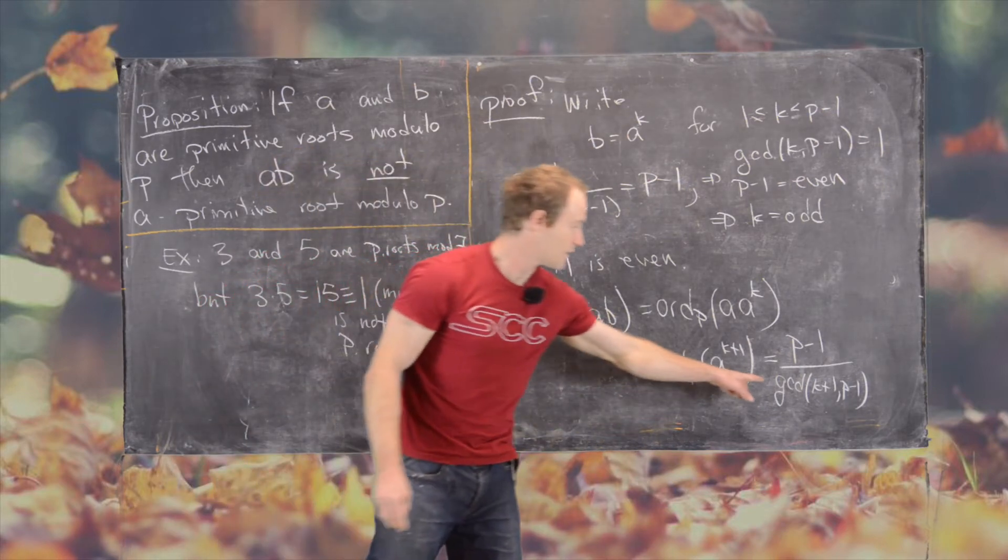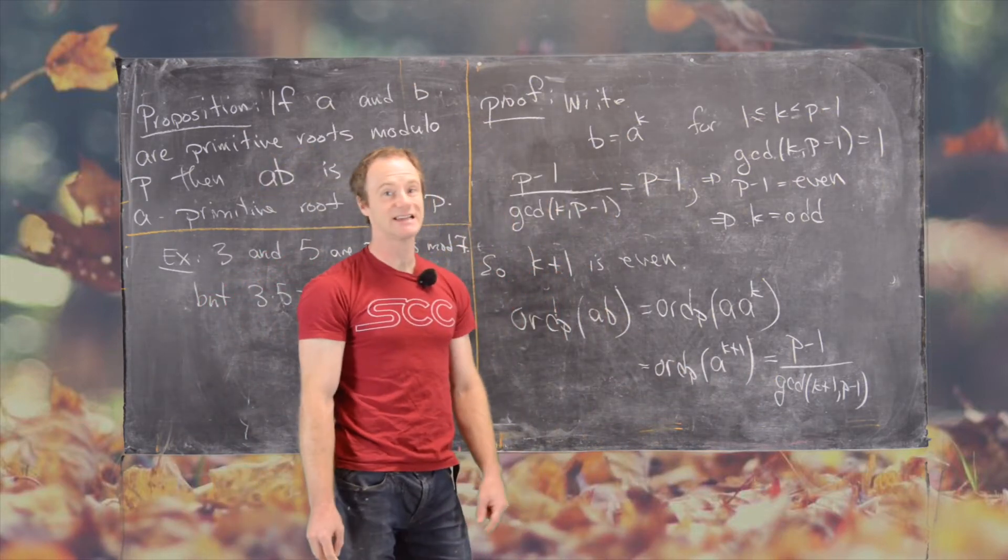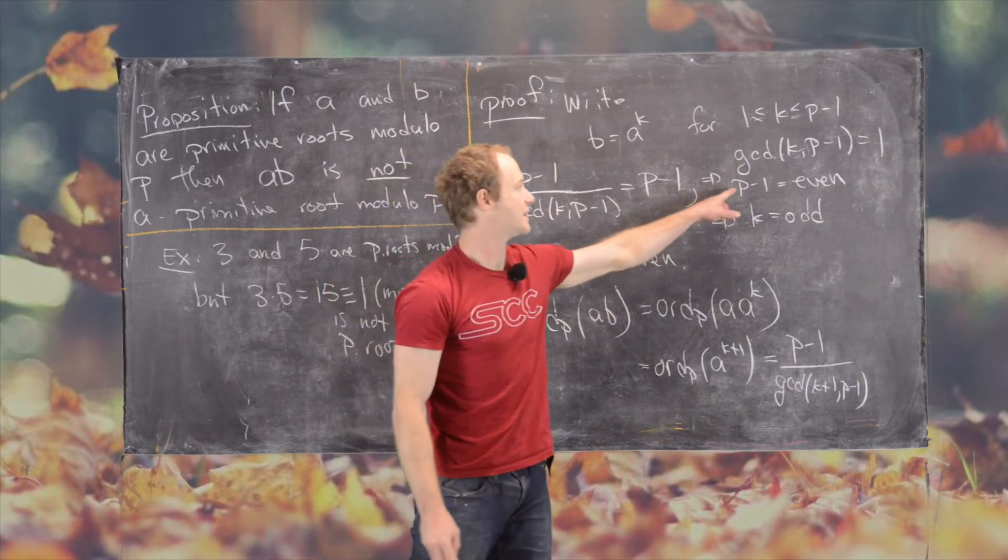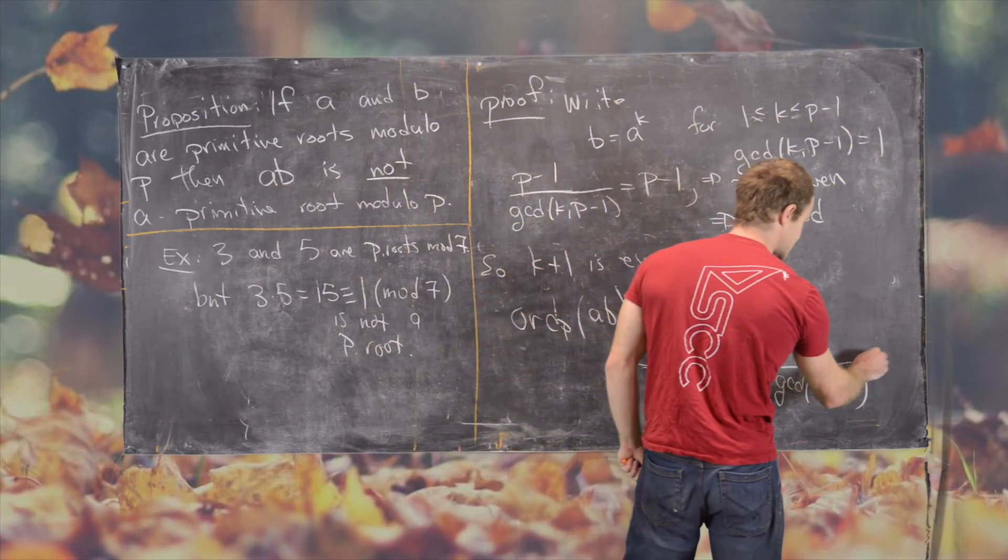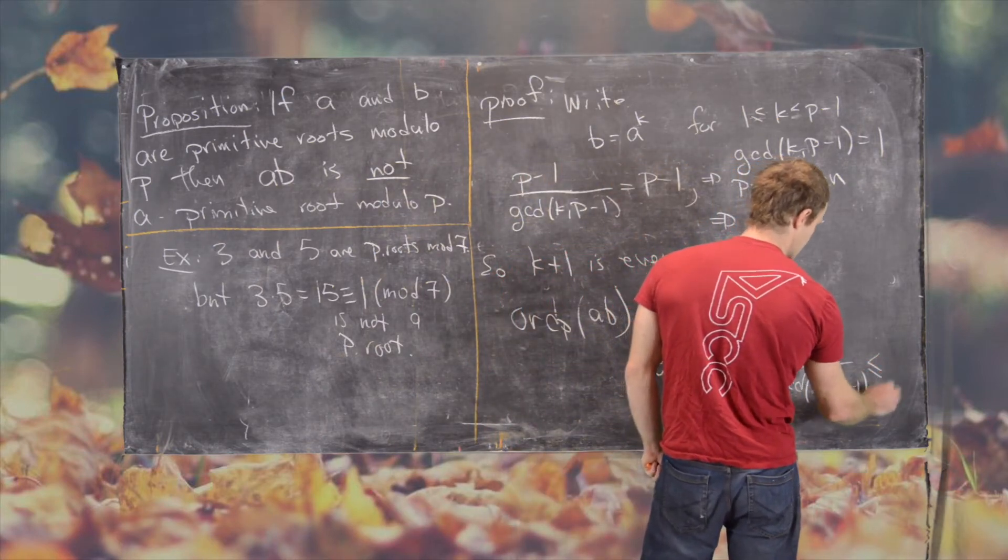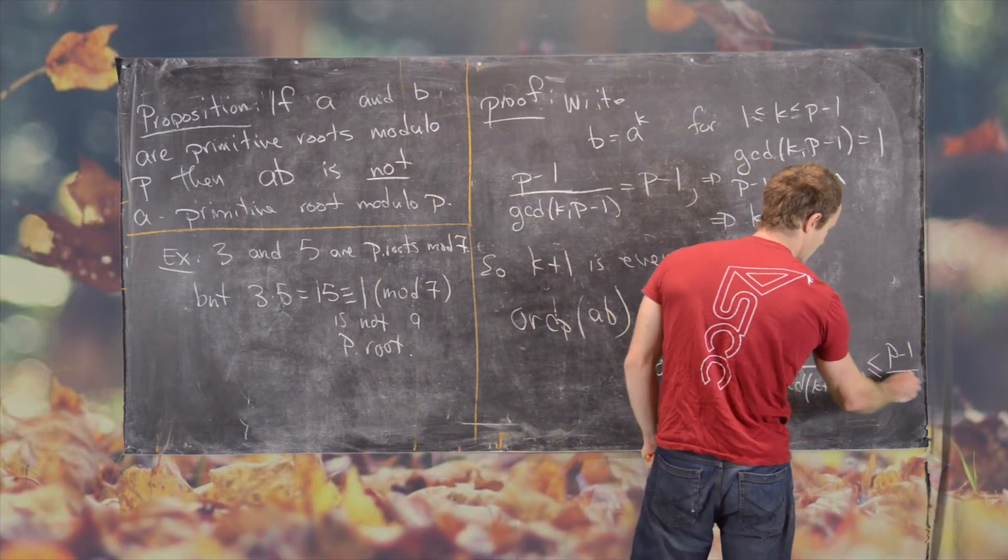But now we know that this denominator is at least 2, because we know that P minus 1 is even and K plus 1 is even. So that makes this less than or equal to P minus 1 over 2.